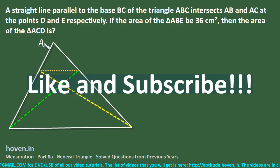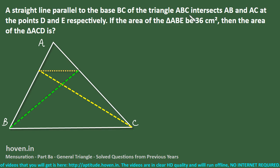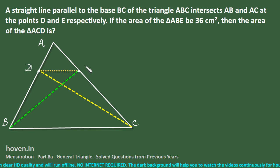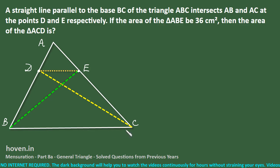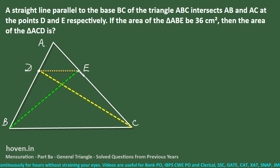Let us suppose the triangle is ABC, and a straight line parallel to the base BC intersects AB and AC at D and E respectively. This point is D and this is point E. DE is the line parallel to the base BC. The area of triangle ABE is given as 36.